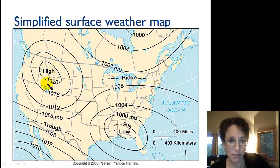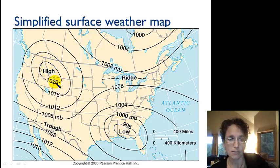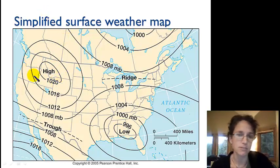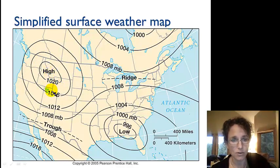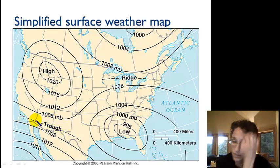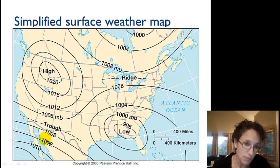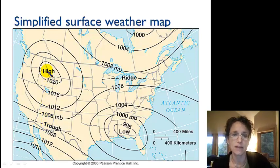A higher number means higher air pressure and a lower number means lower air pressure. Air is going to move from high pressure to low pressure. If we have closed isobars, like a closed circle, that's sort of like a peak — just like a topographic map. So we have this high pressure here; in this example our pressure is 1,020 millibars. As we go to the south, the air pressure decreases until we hit what we're calling a trough, which is basically a linear low pressure area. Then the air pressure increases again — like a valley.